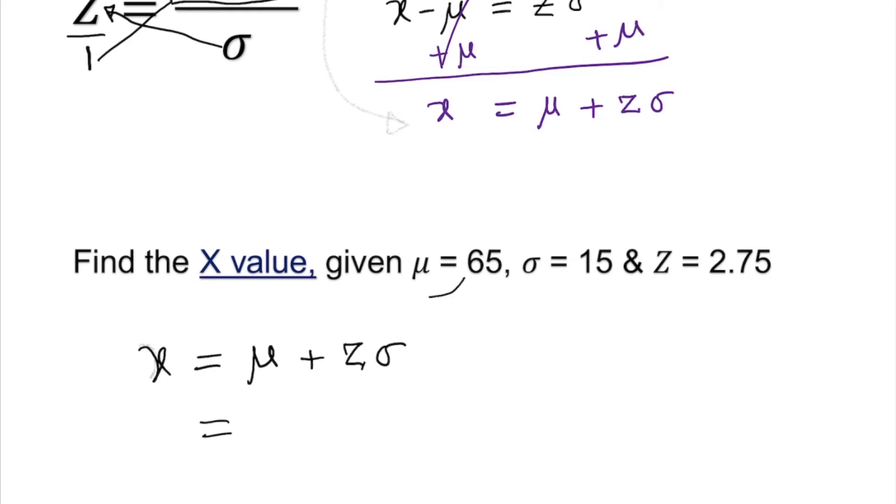The mean in this case is 65 plus the z-score, which is 2.75, times the standard deviation, which is 15. If I do this little arithmetic, I did it ahead of time, it gives me 106.25.